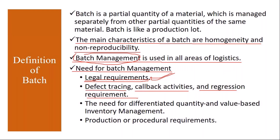Suppose you manufacture a product and sell it to customers, and there is a market complaint — how will you do defect tracing? There should be some unique numbering. Also for callback activities: suppose you get a customer complaint and identify a problem, but at the same time other pieces were manufactured at the same time. You want to call back all that quantity from the market. In that case you need a batch to trace out all those remaining ones.